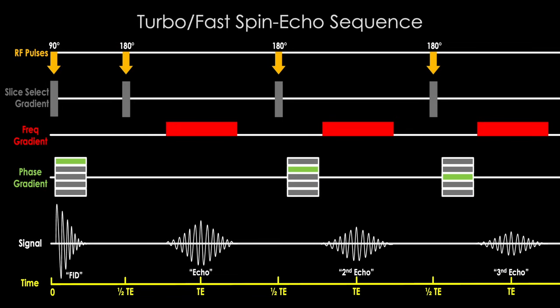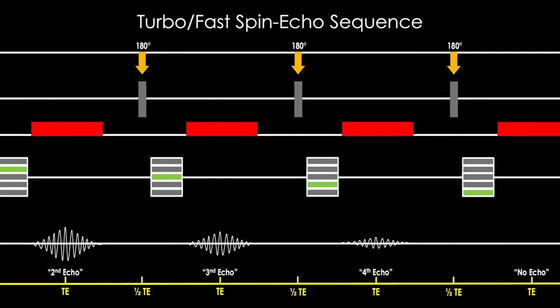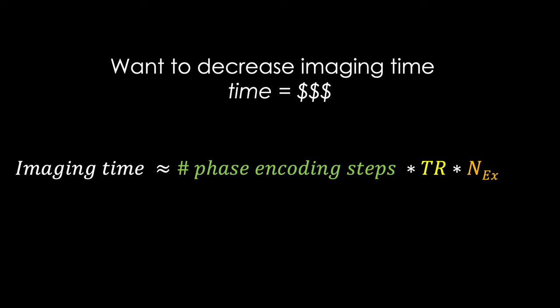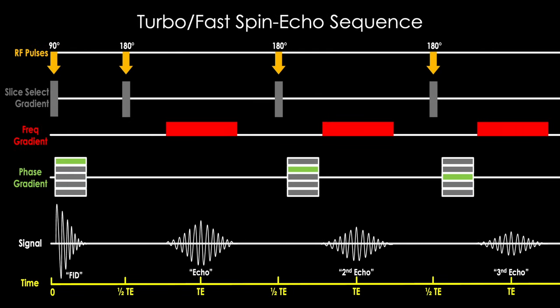We call this pulse sequence the turbo or fast spin echo sequence — the name depends on the MRI machine vendor — and this is a much faster process than our standard spin echo sequence. You may note that the standard spin echo sequence appears to have a shorter TR, and going back to our formula, a longer TR equals a longer imaging time. But this is a perfect example of how rigid testable facts for MRI physics quickly fall apart at basic questioning. So know this for boards, but don't take it to heart — the standard spin echo process is clearly much less efficient than our modern-day turbo fast spin echo sequence.